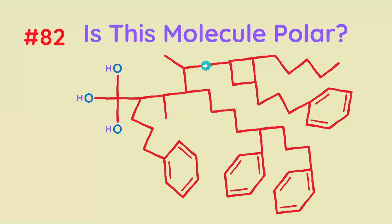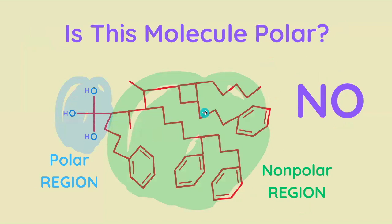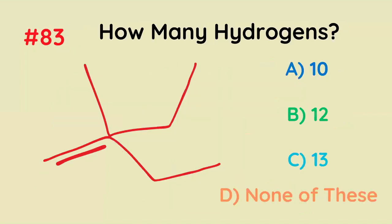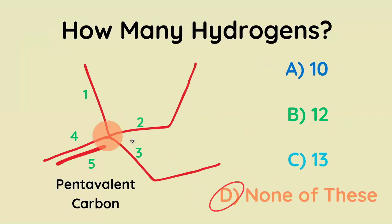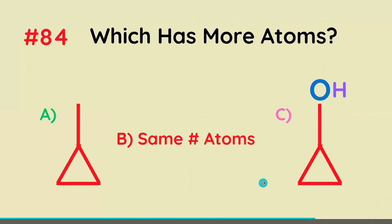Is this molecule polar? It does have a polar region, but it's overwhelmingly nonpolar, so overall it's nonpolar. How many hydrogens does this molecule have? It's a pentavalent carbon with five attachments, and that cannot happen — it would be way too unstable, so this molecule doesn't even exist. The correct answer is none of these.